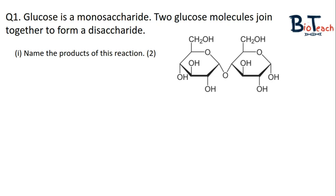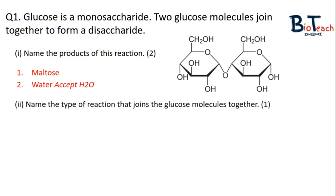We know that two alpha molecules of glucose will make maltose, so one of the products has to be maltose. We also know this is a reaction that releases one water molecule, so water has to be the second product. Note that they do accept H2O as an answer. The next part of the question expects you to name the reaction that joins those molecules of glucose together, and we all know that it's a condensation reaction that takes place.